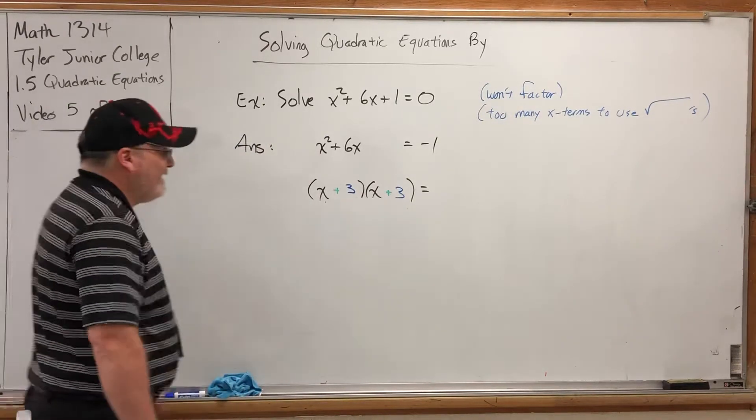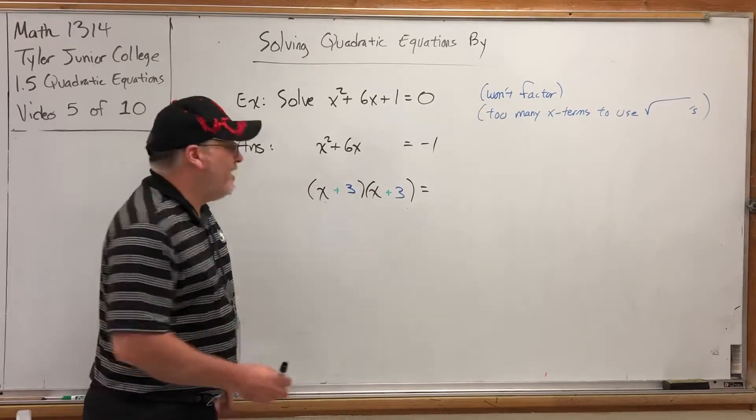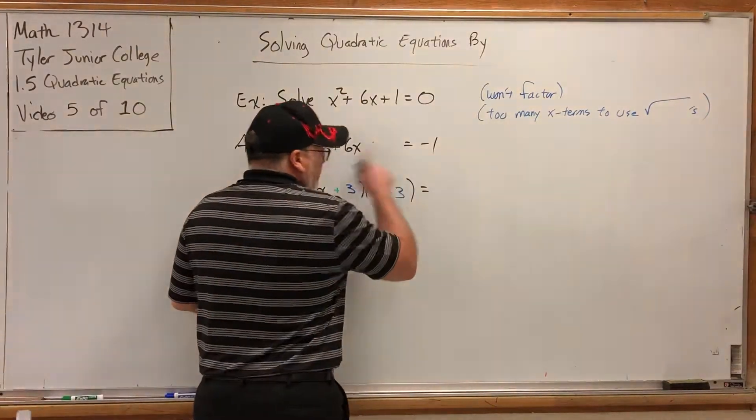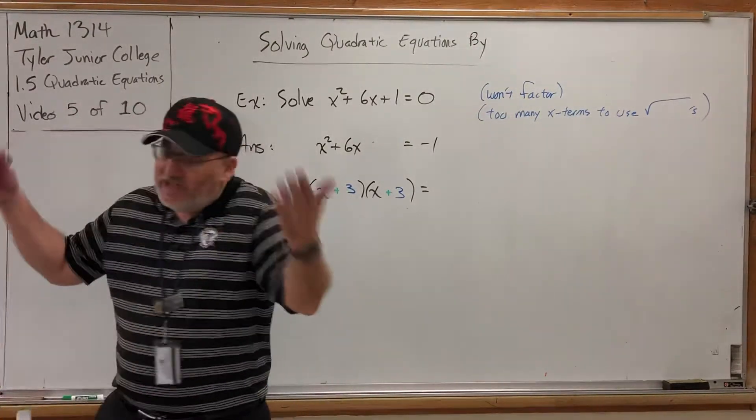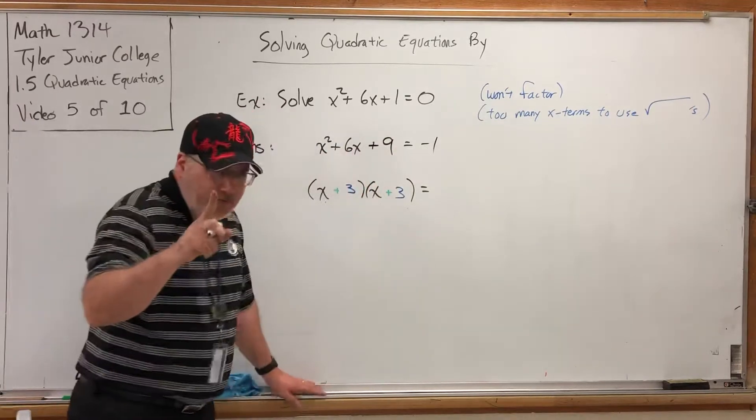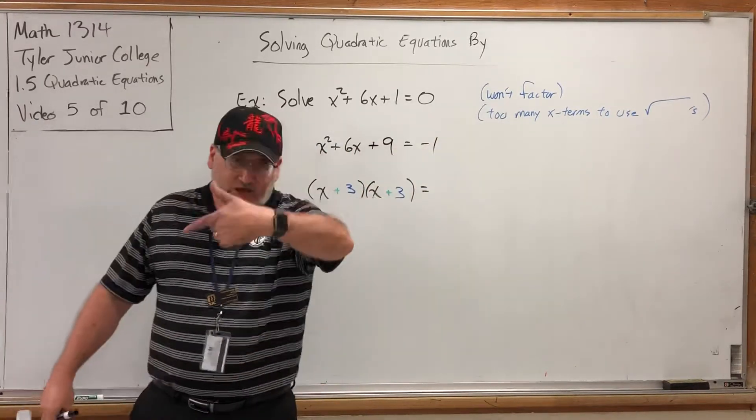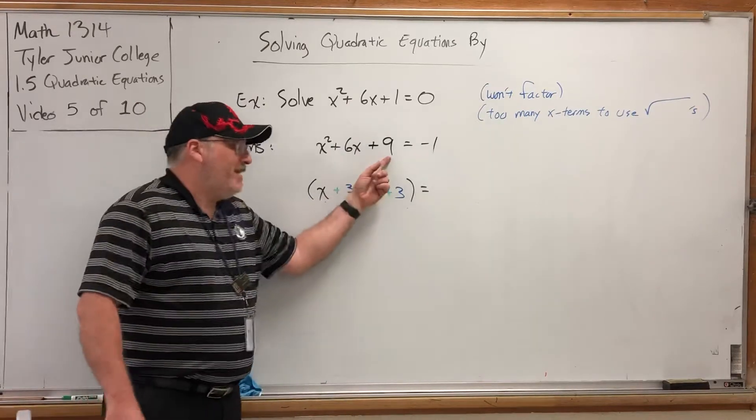So I need a plus 9 here. So let's put a plus 9 there. Now, you can't just walk up to an equation that's perfectly balanced and say, I'm going to add 9 to the left side because I need it there. Unless you know the rule, whatever you do on the left side, you have to do on the right side.